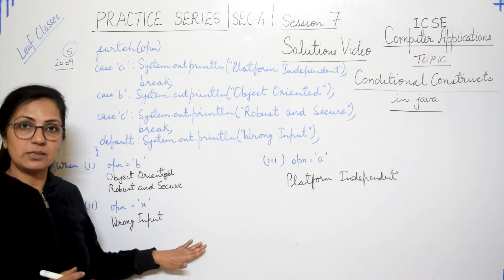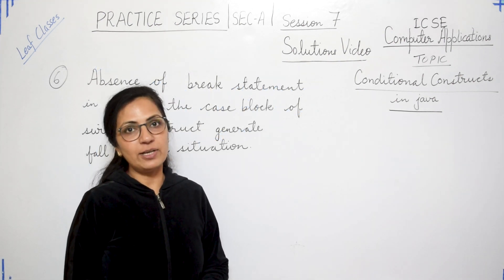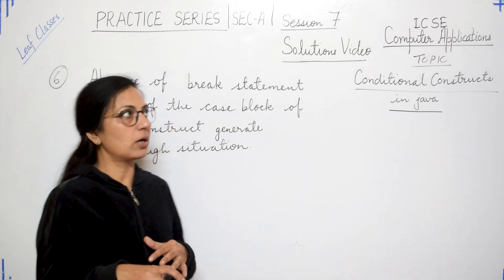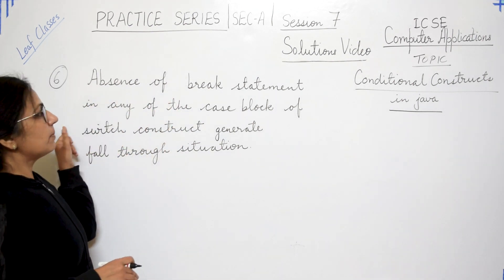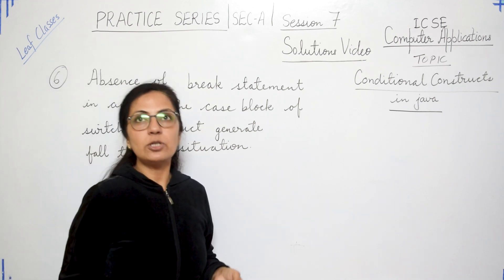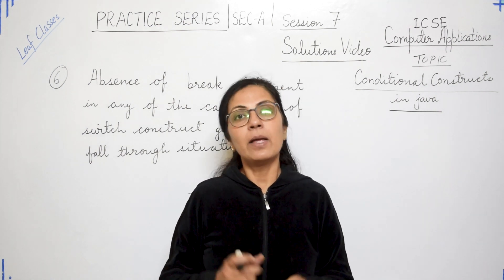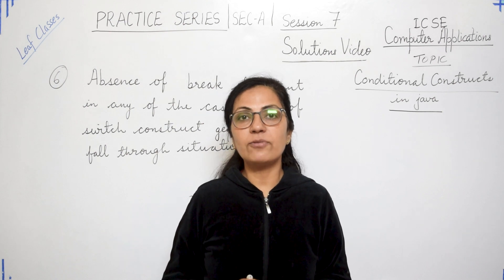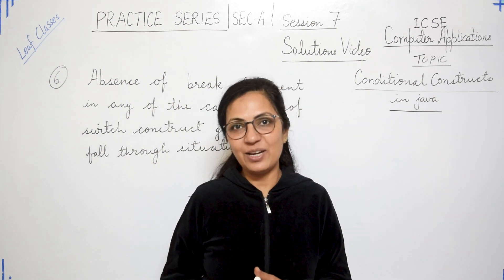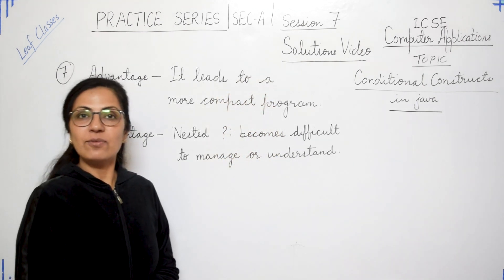Question 6: what is fall-through? If we don't give a break statement after a case block, the fall-through condition occurs and control goes into the next case block. The definition: absence of a break statement in any case block of a switch construct generates a fall-through situation. If asked how to avoid fall-through, the answer is: we should give a break statement after each case block.